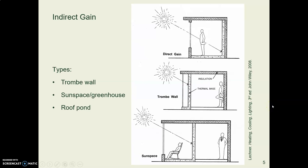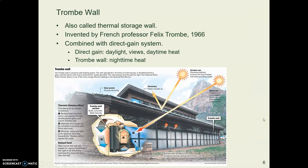Now let's think about indirect gain, beginning with a thing called the trombe wall, which was named for the person who invented it. Here is a drawing of the Zion National Park Visitor Center, which uses a trombe wall. You can see dark-colored concrete blocks — the sun comes in through the glass, hits the concrete blocks, the thermal mass stores heat, and radiates it out.